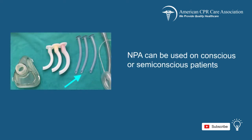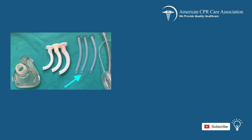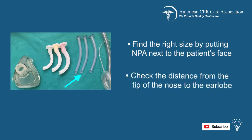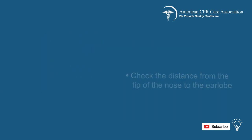The nasopharyngeal airway, or NPA, can be used on a conscious or semi-conscious patient. To use this airway device, first find the appropriate size by placing the NPA next to the patient's face and checking that it is equal to the distance from the tip of the nose to the earlobe. It is imperative to use a proper size for the NPA, as the wrong size NPA can go into the esophagus and cause gastric inflation.